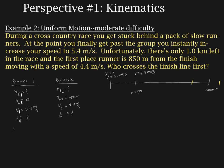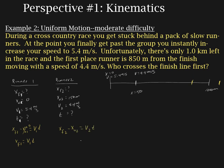For each runner we set up an equation describing their motion. For runner 1: x final 1 minus x initial 1 equals v1 times t. Since x initial 1 was 0, we get x final 1 equals v1 times t. For runner 2: x final 2 minus x initial 2 equals v2 times t, so x final 2 equals x initial 2 plus v2 times t.